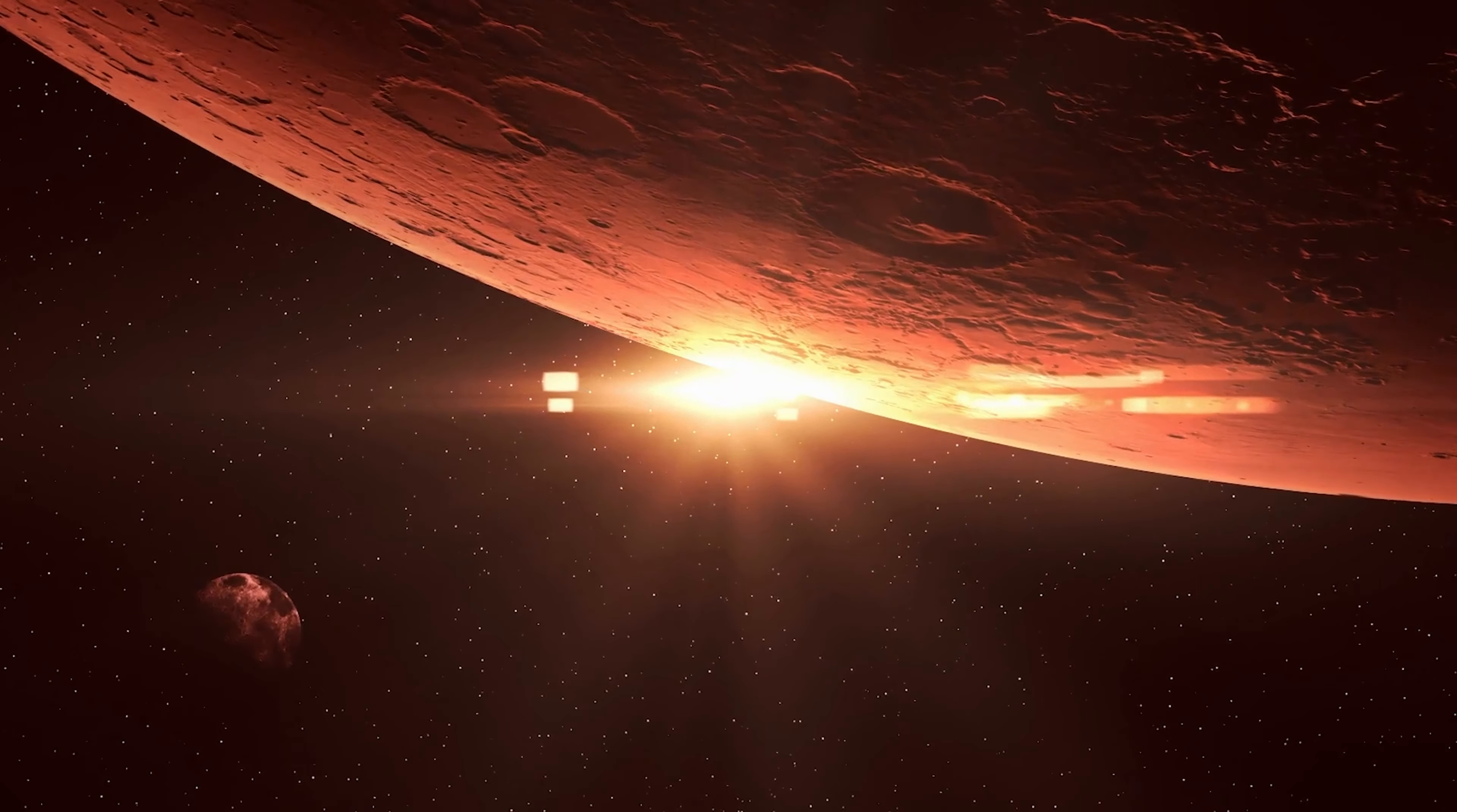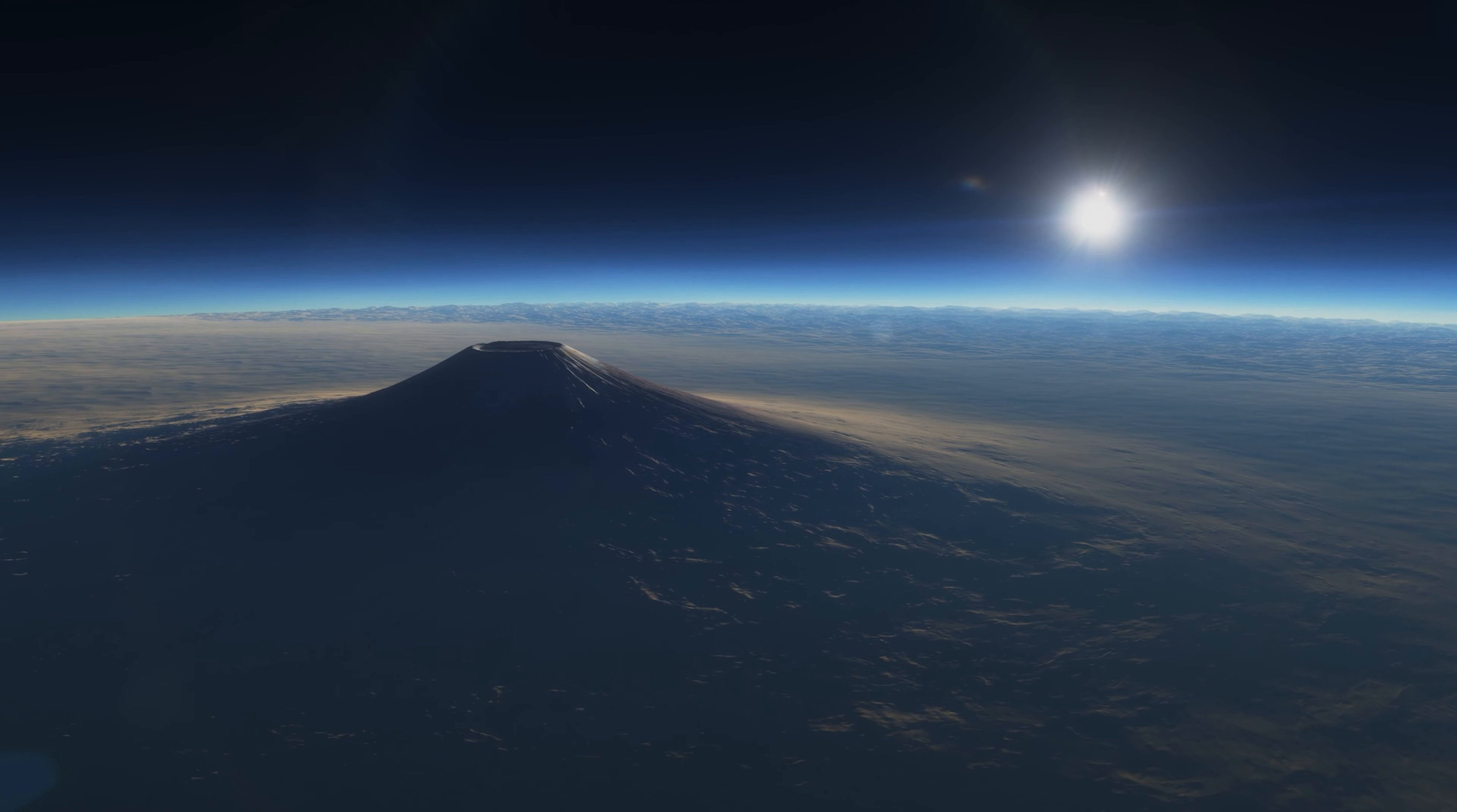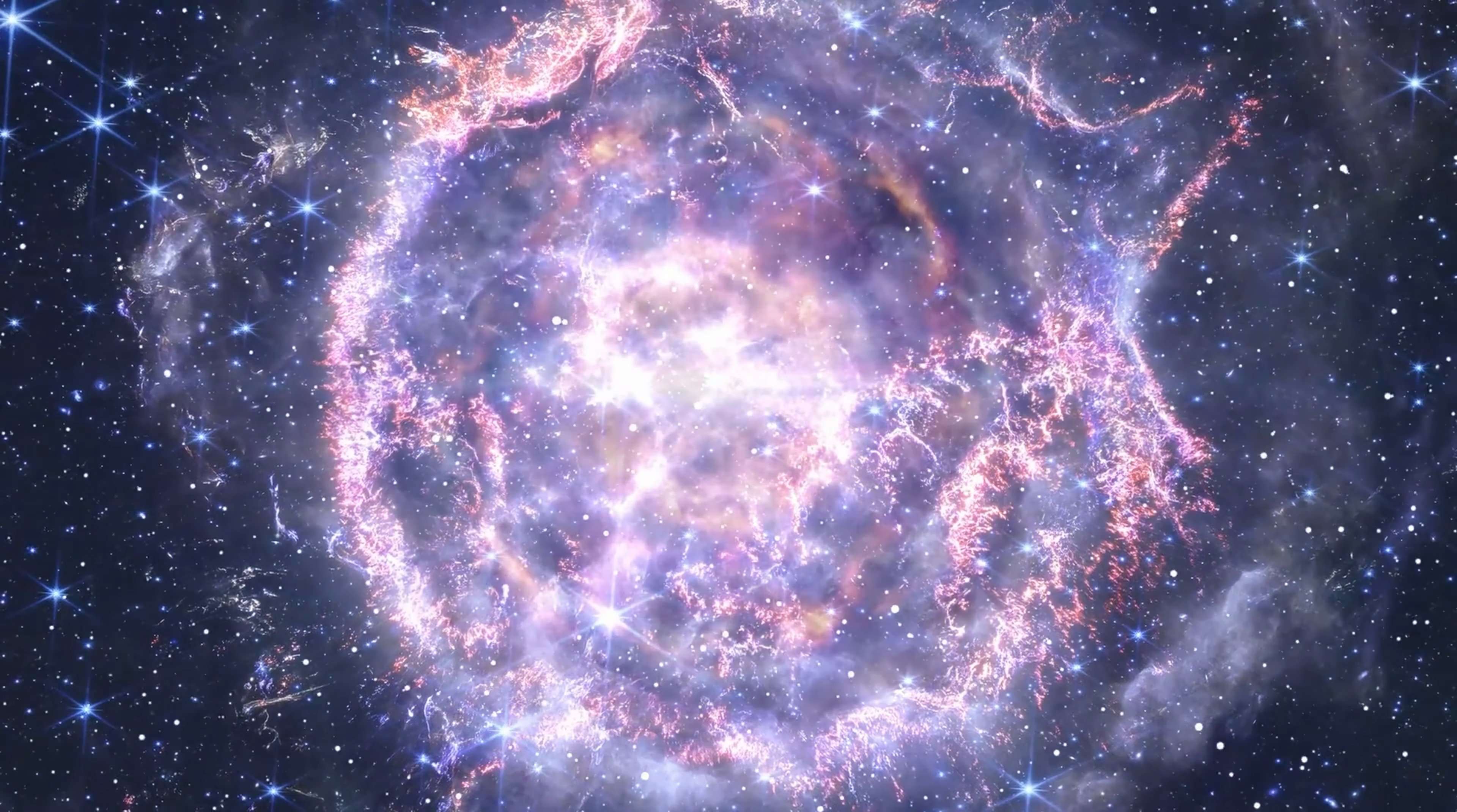But Betelgeuse is more than just a pretty sight. It plays a key role in the celestial dance above us. Alongside two other stars, it forms the famous Winter Triangle and stands tall at the center of the Winter Hexagon. From January to March, it graces our skies, rising in the east after sunset. Its glow illuminates the darkness, visible to almost every corner of the inhabited world. When night falls, Betelgeuse shines among the stars, a constant companion in our cosmic journey.